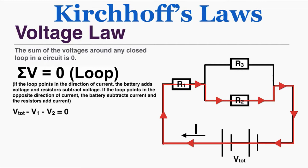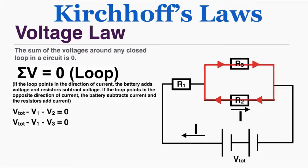I can also look at another path, and Kirchhoff's law says those voltages also add to make zero. There's also a third loop in this problem. The current flows against the direction I'm observing — the current flows right through R2, but my loop goes to the left. That means I consider it an addition of voltage rather than a subtraction in that resistor. So I would say negative V3 plus V2 equals zero.